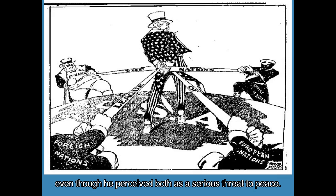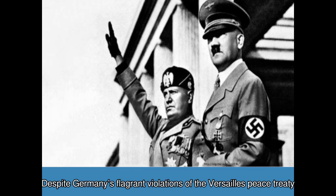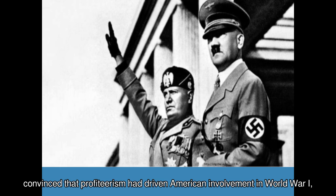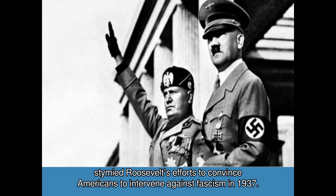Response to the growing threat of fascism: despite Germany's flagrant violations of the Versailles Peace Treaty, and the alarming rise of fascism in Italy and Spain, the belief that profiteering had driven American involvement in World War I stymied Roosevelt's efforts to convince Americans to intervene against fascism in 1937.